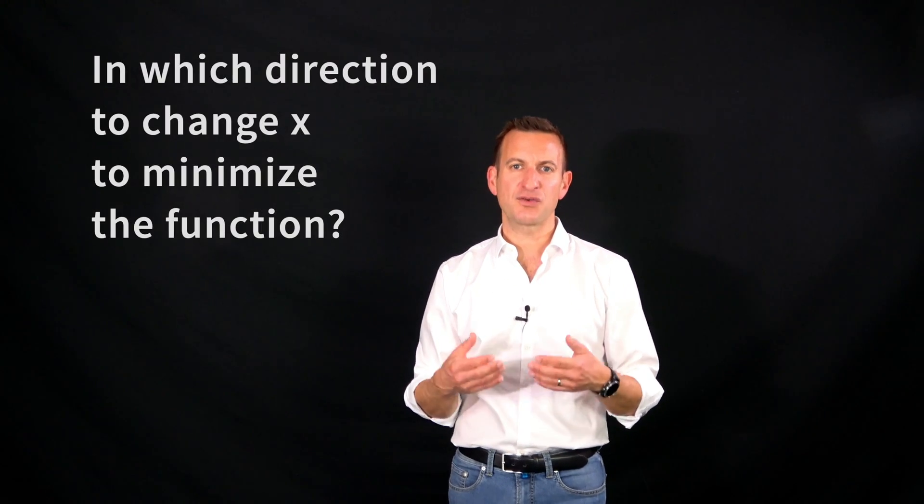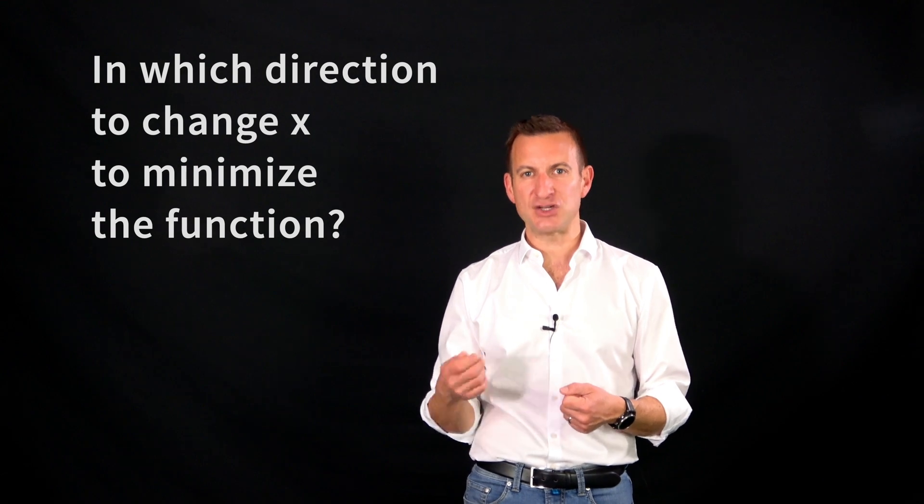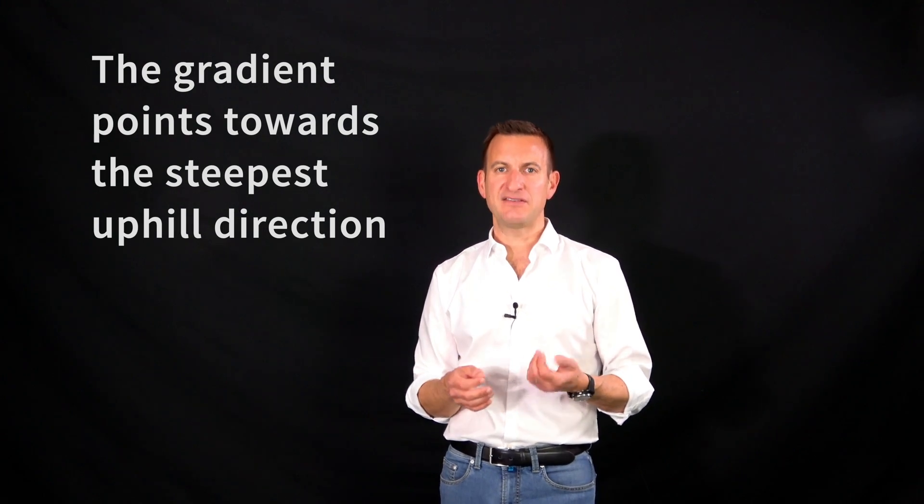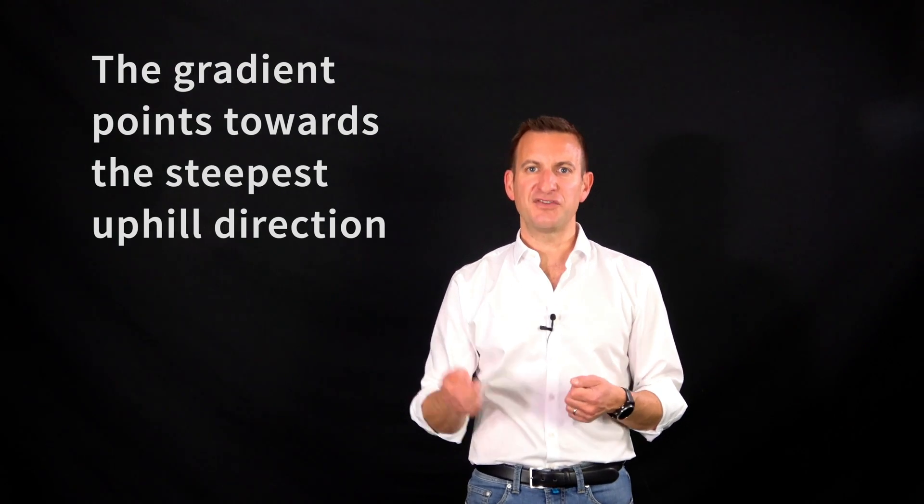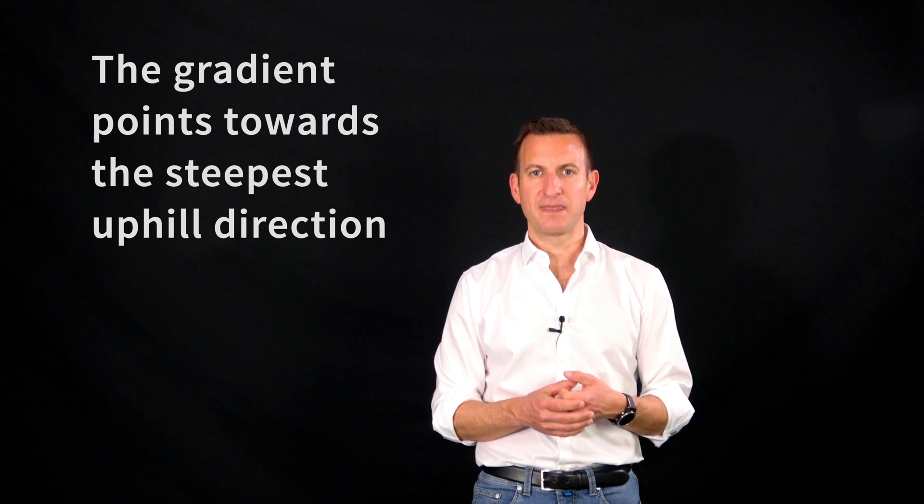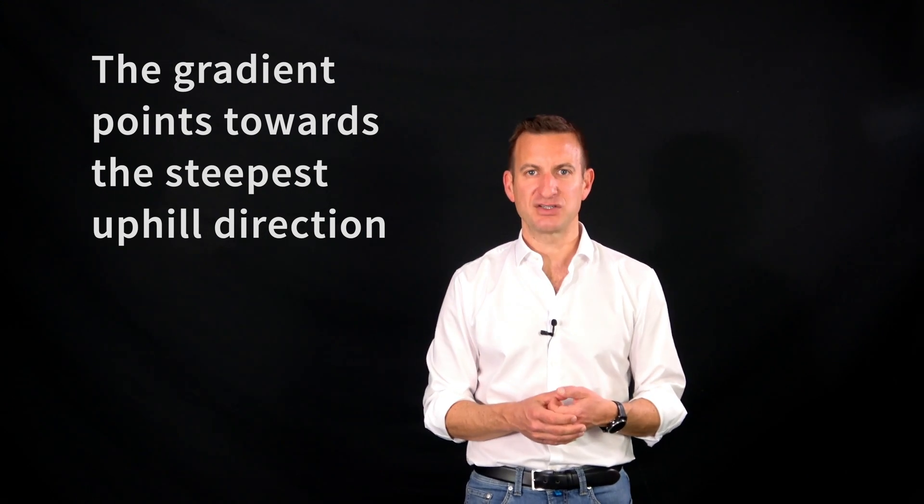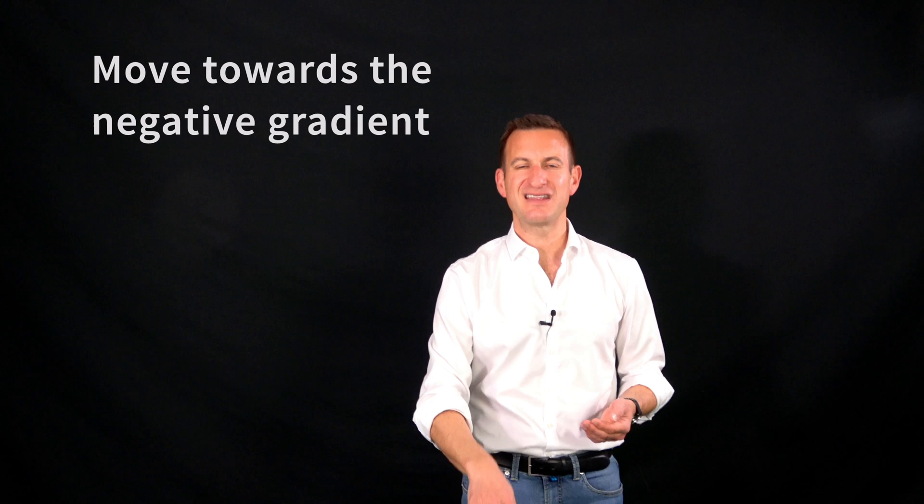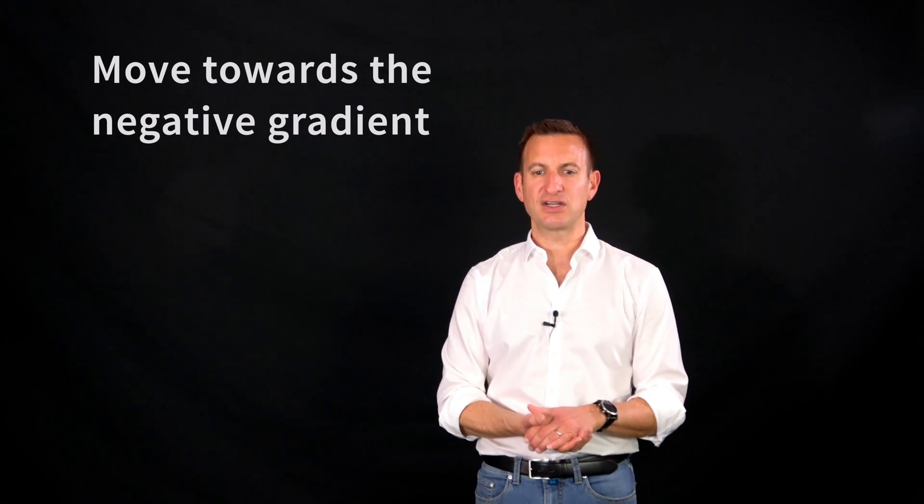The key question is what is the right direction in which I should change x? And here the gradient plays an important role, because the gradient of a function basically gives us the direction of the steepest uphill movement. So what we do is we just walk in the direction of the negative gradient because this is the steepest downhill direction that we can actually take.